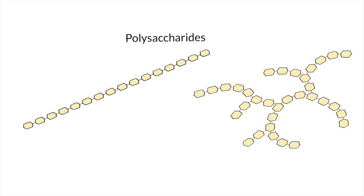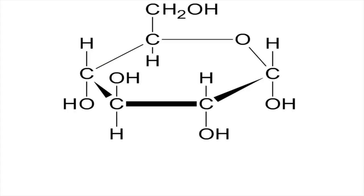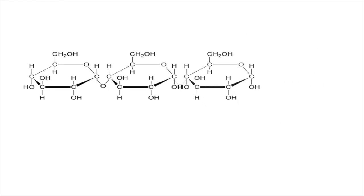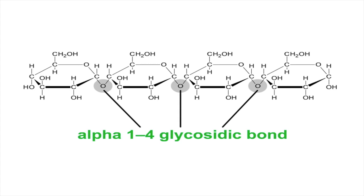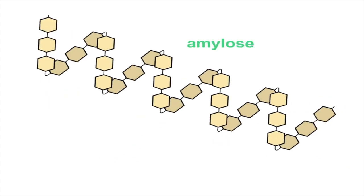Starch is made up of two types of molecules. Straight chains that are not branched are called amylose. The other molecule within starch is branched, and this one is called amylopectin. This combination of amylose and amylopectin is what is known as starch. Starch starts with molecules of alpha glucose attaching to each other by the same 1,4 glycosidic bond we have seen in disaccharides. This results in the formation of a helical structure known as amylose, and the reason why amylose takes this unique shape is because of hydrogen bonds.